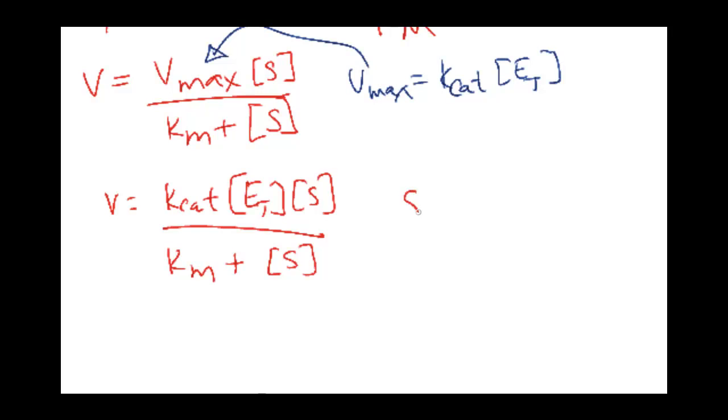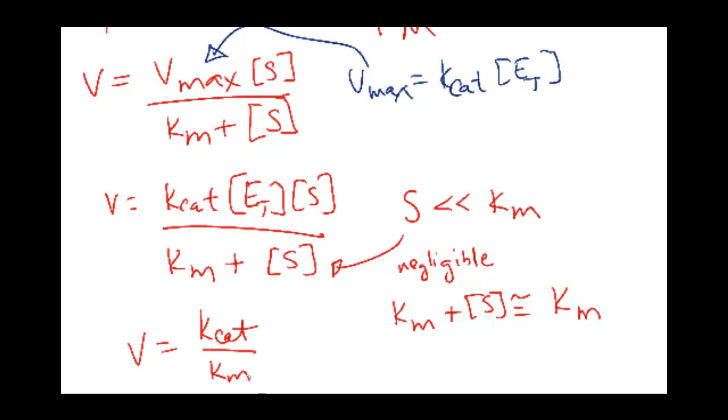When we have the situation in which the substrate concentration is much smaller than the Km, what happens is the substrate concentration in the denominator becomes negligible. And whenever that happens, we can say that Km plus S is approximately equal to just the Km. That will be the dominant term in the denominator. So what will happen is we will now get this equation.